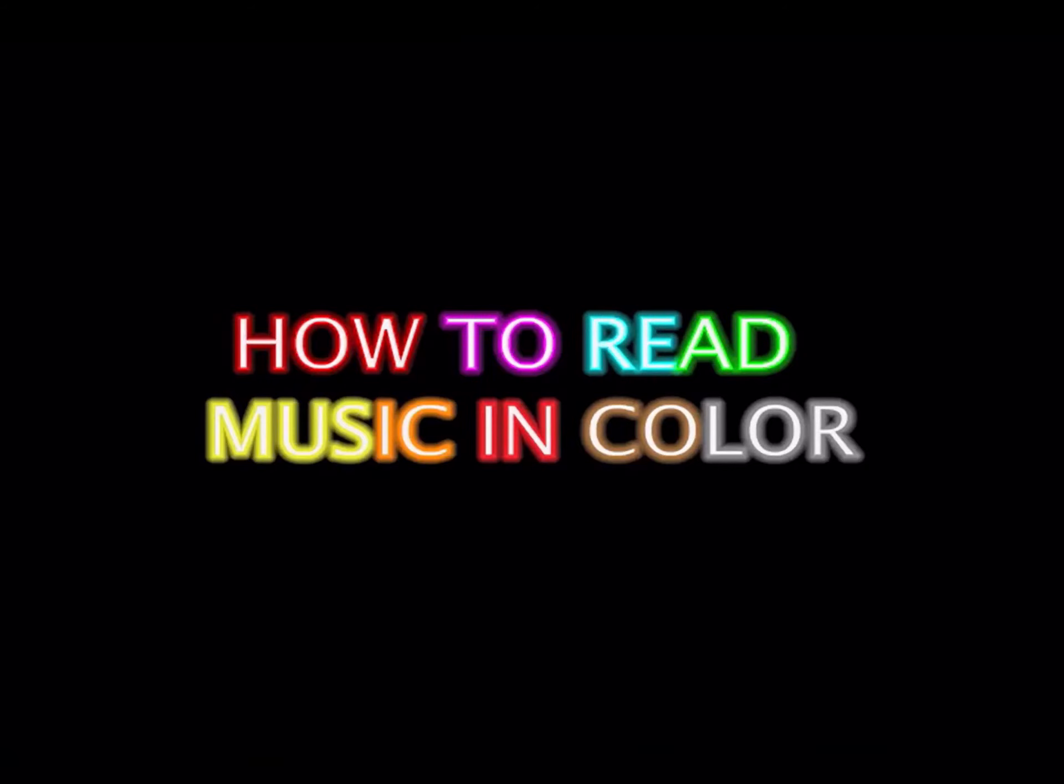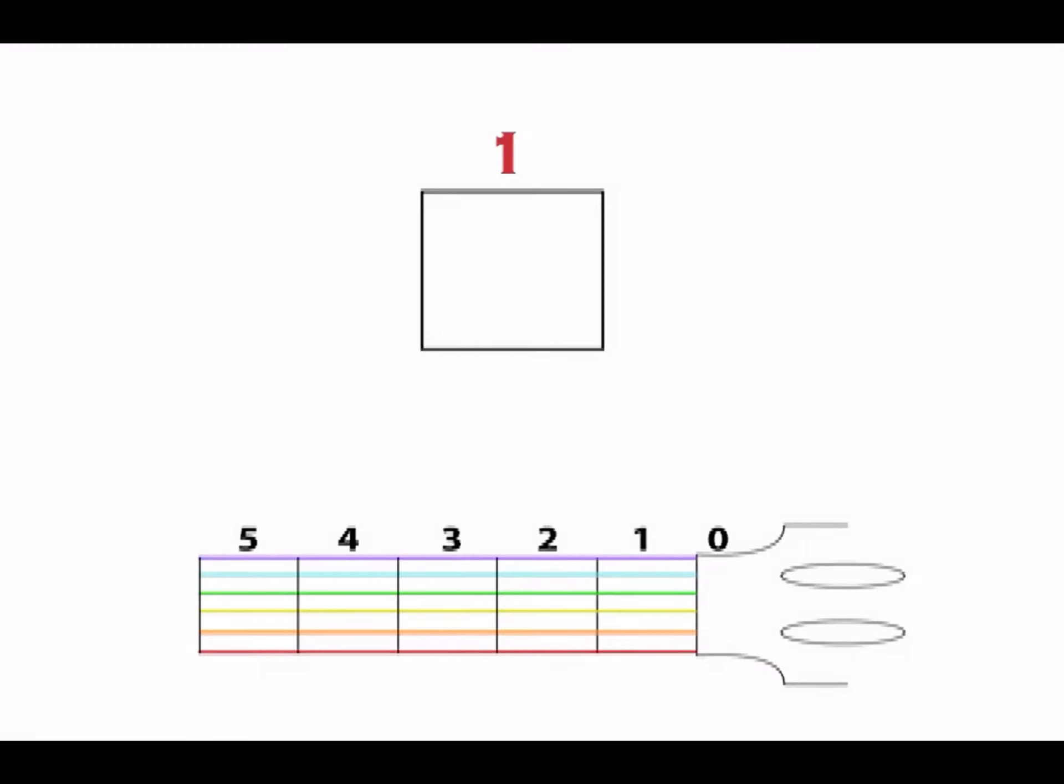How to read Music in Color. The musical notes of Music in Color are written in colored numbers. When you read a number, all you have to do is play the fret number and the color of the string.